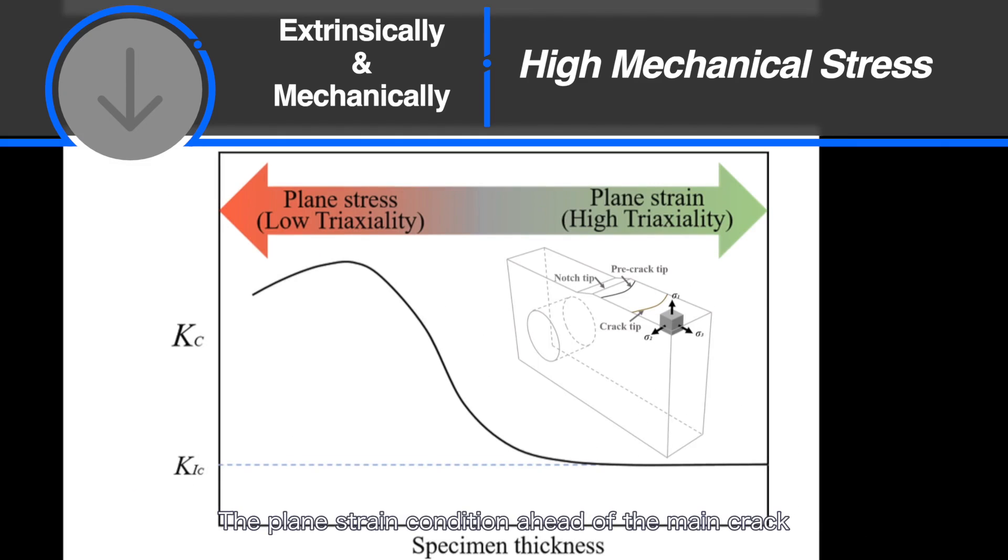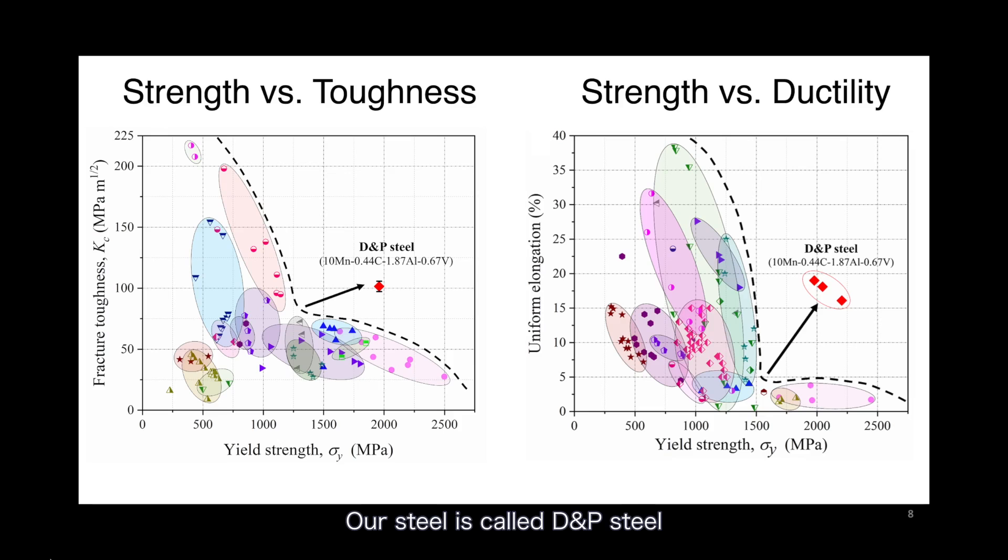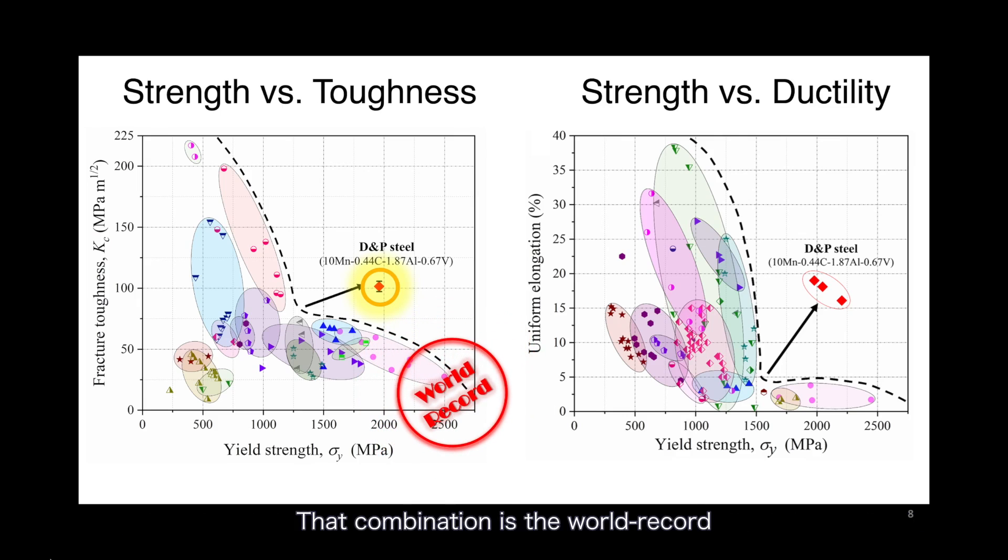The plane strain condition ahead of the main crack now changes to plane stress, which increases the fracture toughness. Our steel is called DNP steel. With this DNP strategy, we achieve the best combination of fracture toughness and yield strength. That combination is a world record.